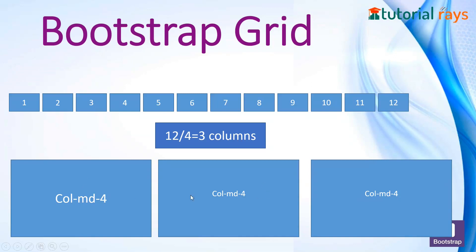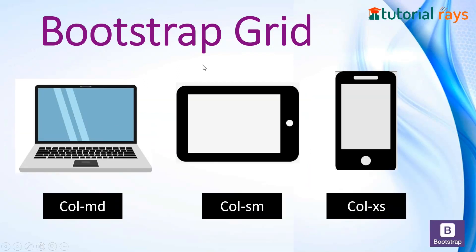In the section below you can see there are three boxes. If you want to make three boxes, this works on a formula: 12 divided by 4 equals 3 columns. So you write col-md-4, col-md-4, col-md-4 — that will generate three columns. For desktop/laptop you write col-md, for tablet col-sm, and for mobile devices col-xs.